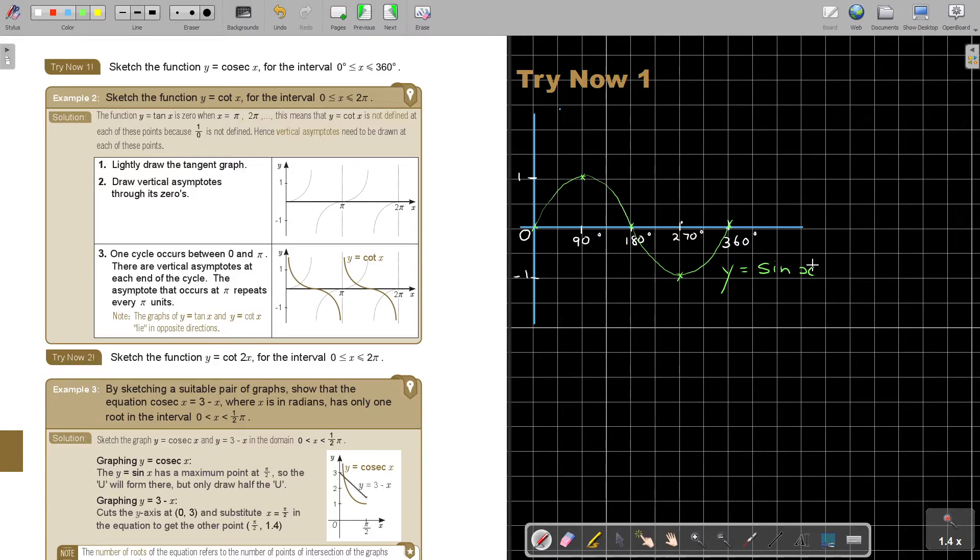Now, we follow exactly the same principles. So where is the sin graph zero? It's there. So basically, it's also there. So I can already go and draw. This will be my asymptote. This is my asymptote. And now I'm going to start. So my asymptote is going to be at 180 and 360. The function is zero when it's actually here also. Don't forget, it's also here. So because it's at 0, 180, and 360, this means that y is not defined at each of these points. Each vertical needs to be drawn at each of those points.